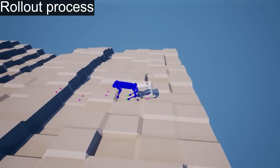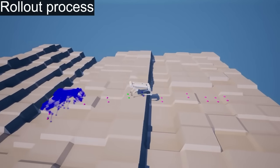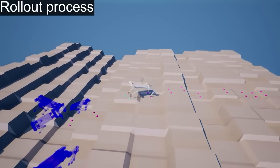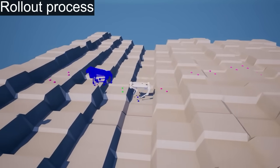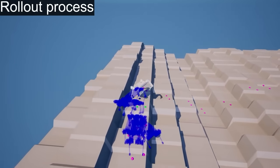The planning module performs sampling and rollouts in parallel across eight different threads, separate from the tracker module. The real robot controlled by the tracker module is depicted in gray, while the rollout process is shown in blue. The final goal position is represented by a light green cube.